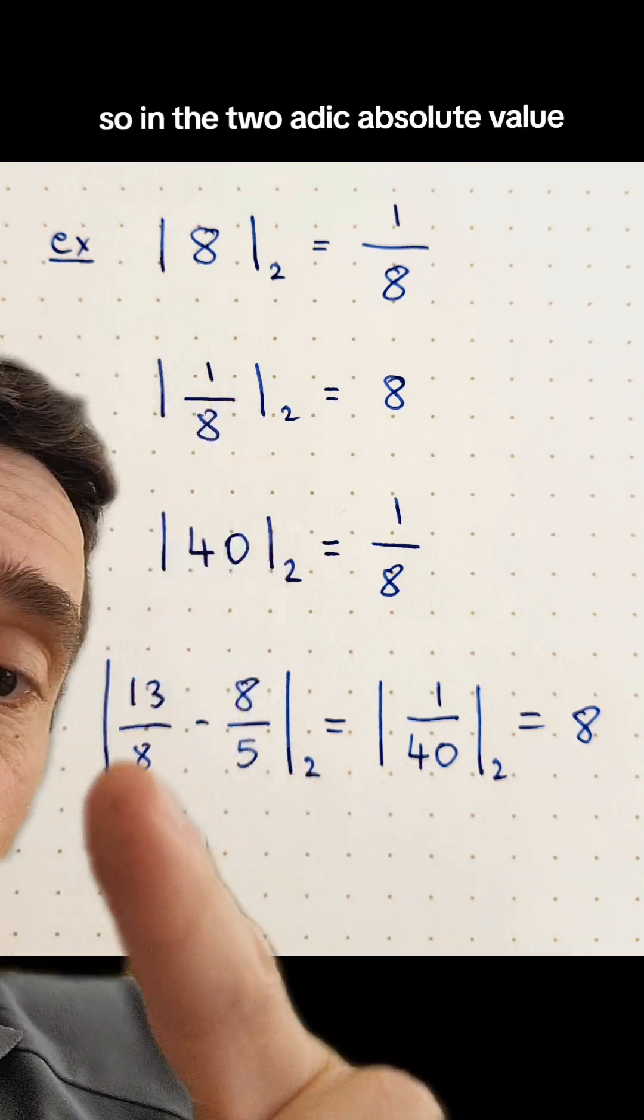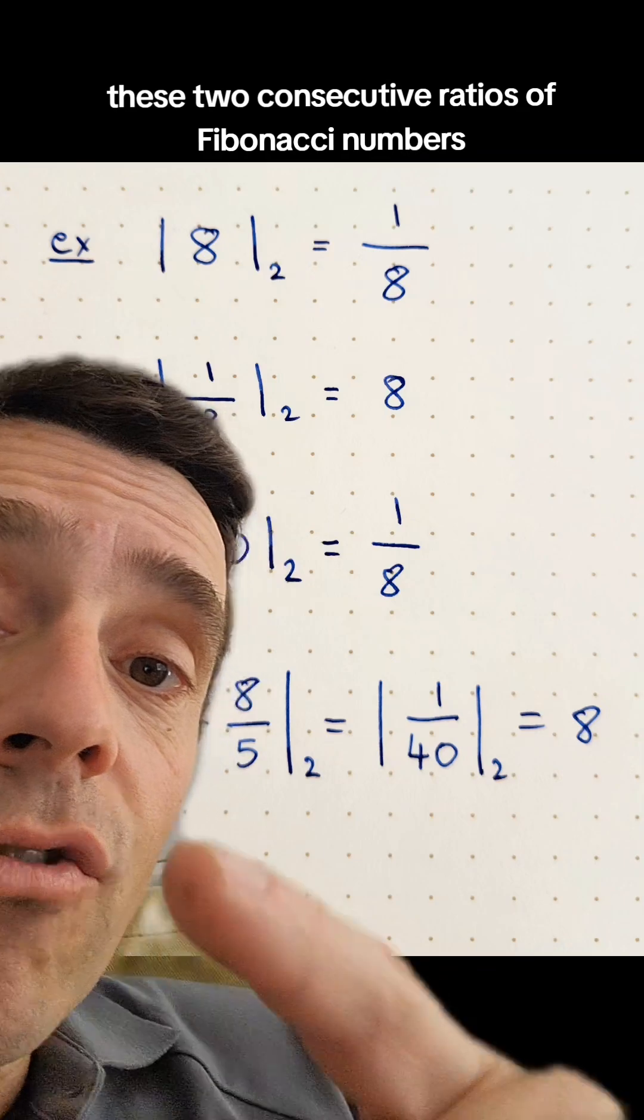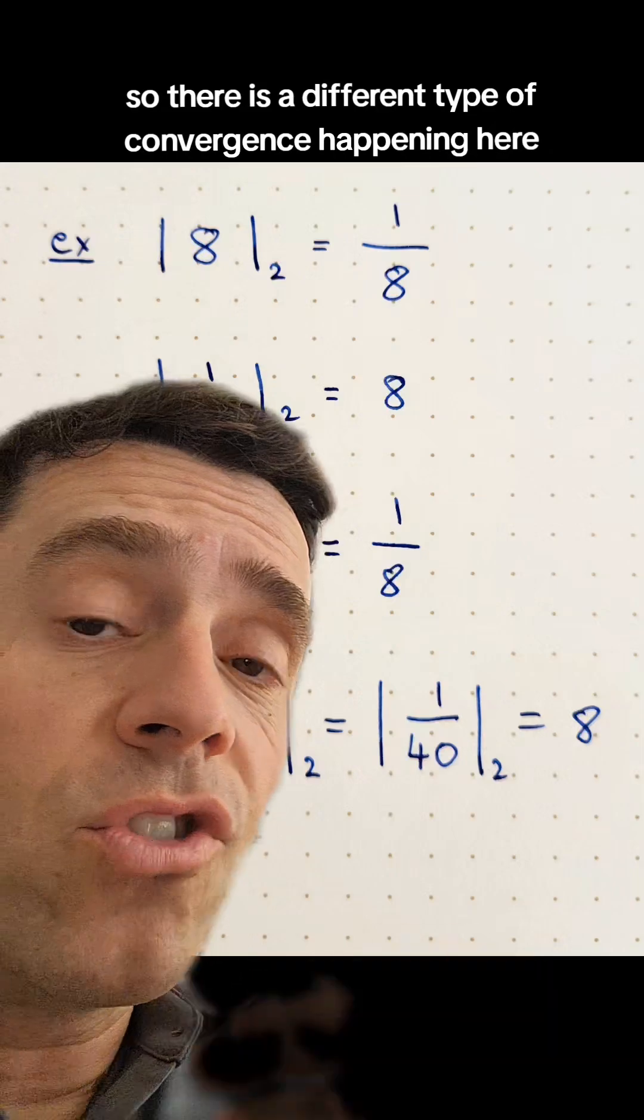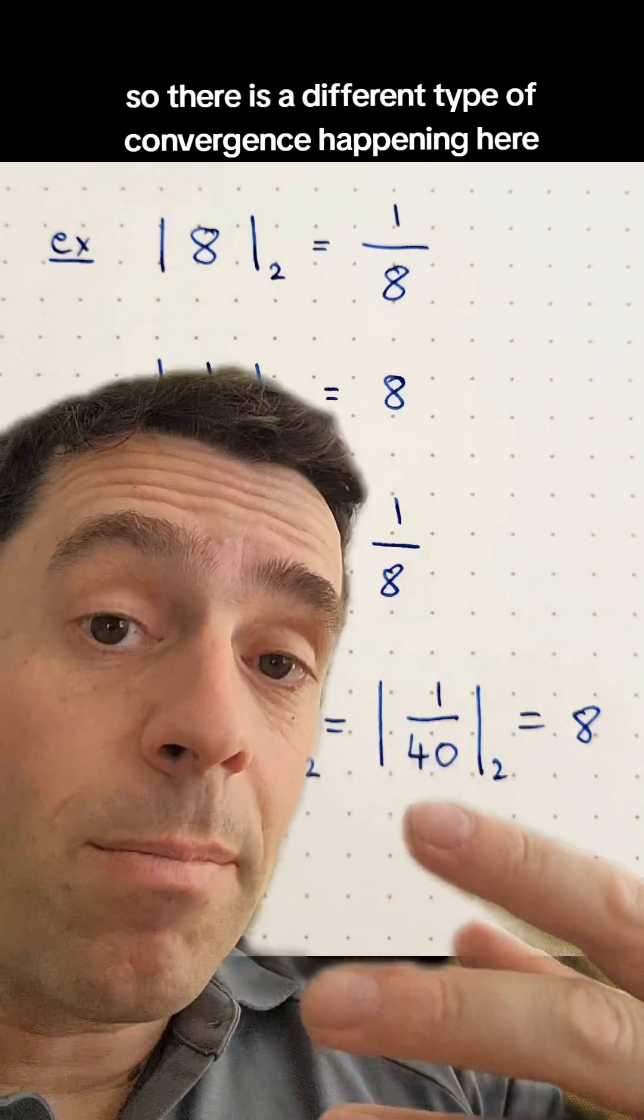So in the 2-adic absolute value, these two consecutive ratios of Fibonacci numbers are actually not close together. So there is a different type of convergence happening here.